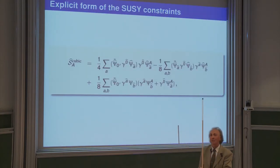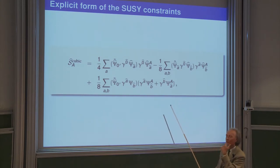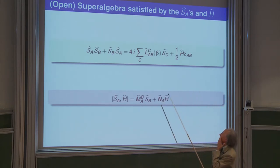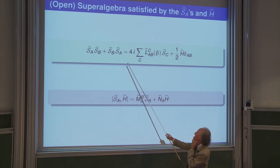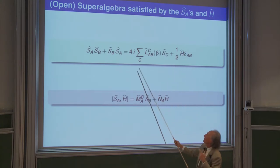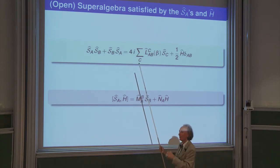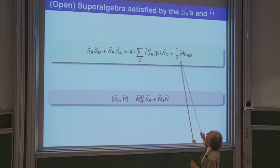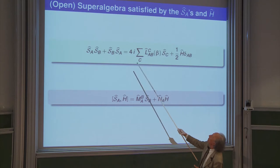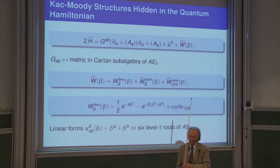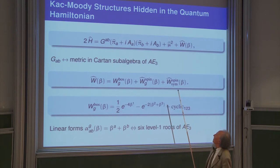We checked explicitly, which took some time, that the anticommutator of these supersymmetry operators closes on the Hamiltonian H. Since we want S to vanish on the state, the anticommutator of two S's must also vanish modulo S or H. This equation is compatible with the constraints. We have an open superalgebra — open meaning the right-hand side has structure functions of beta rather than constant structure constants. The main question we addressed is: are there really hidden Kac-Moody structures in this system?